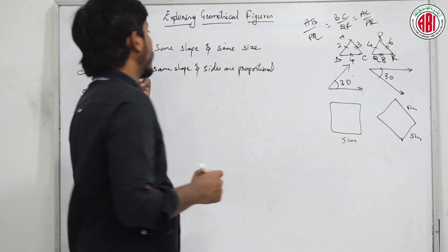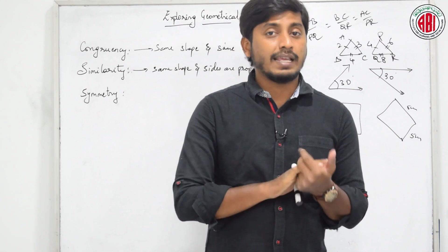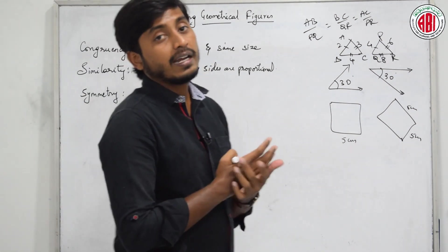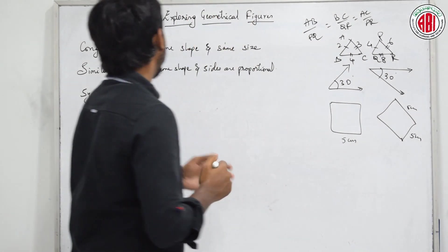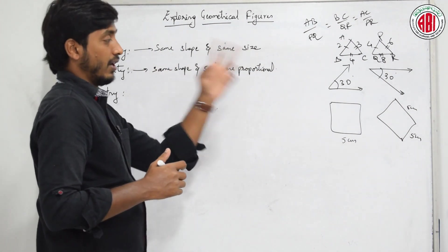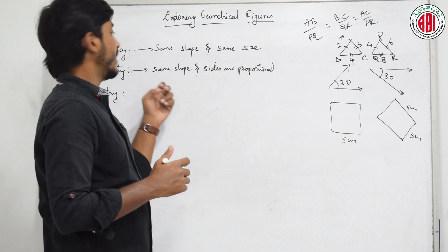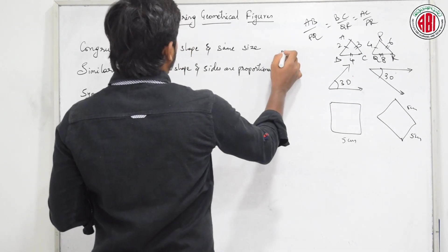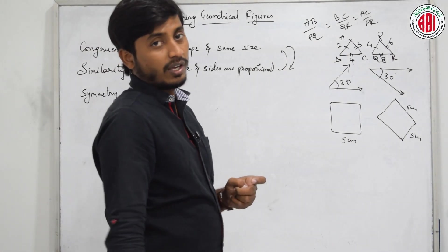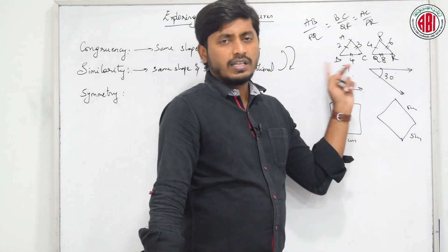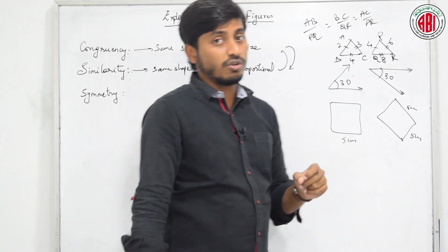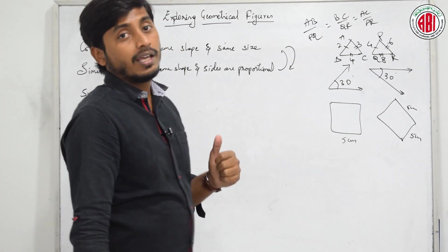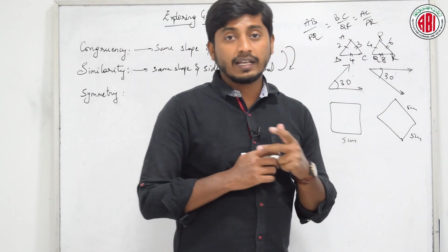Let me summarize: congruency means both figures should have same shape and same size. Similarity means both figures should have same shape and the sides should be proportional. Now, can two congruent figures also be similar? Yes. Every congruent figure is also similar, because they have the same shape and same size, so their ratio is always 1. But all similar figures cannot be congruent, because in similarity the ratio can vary.